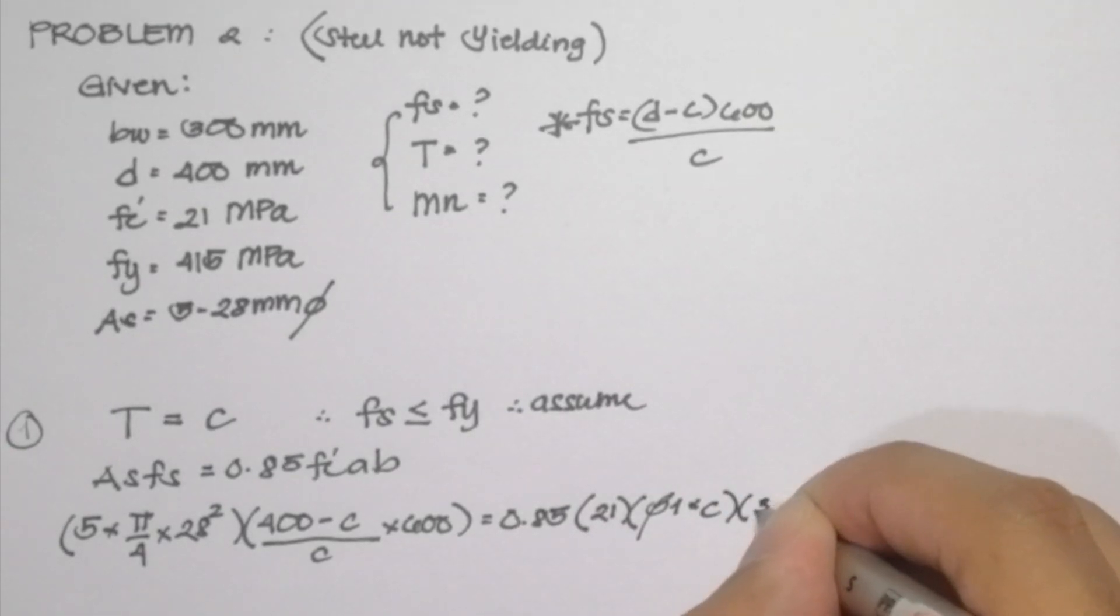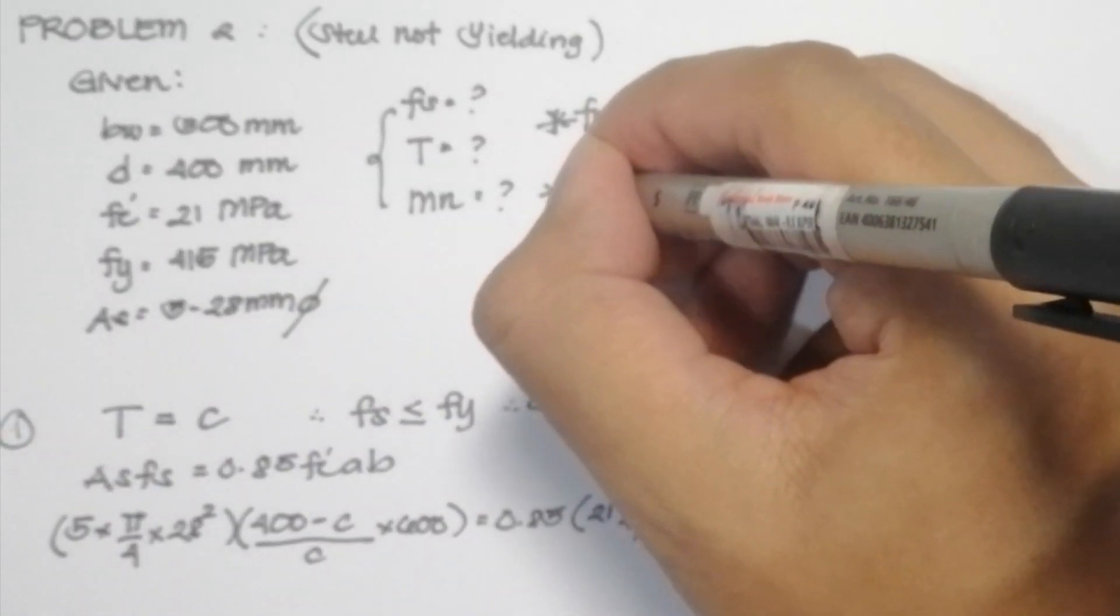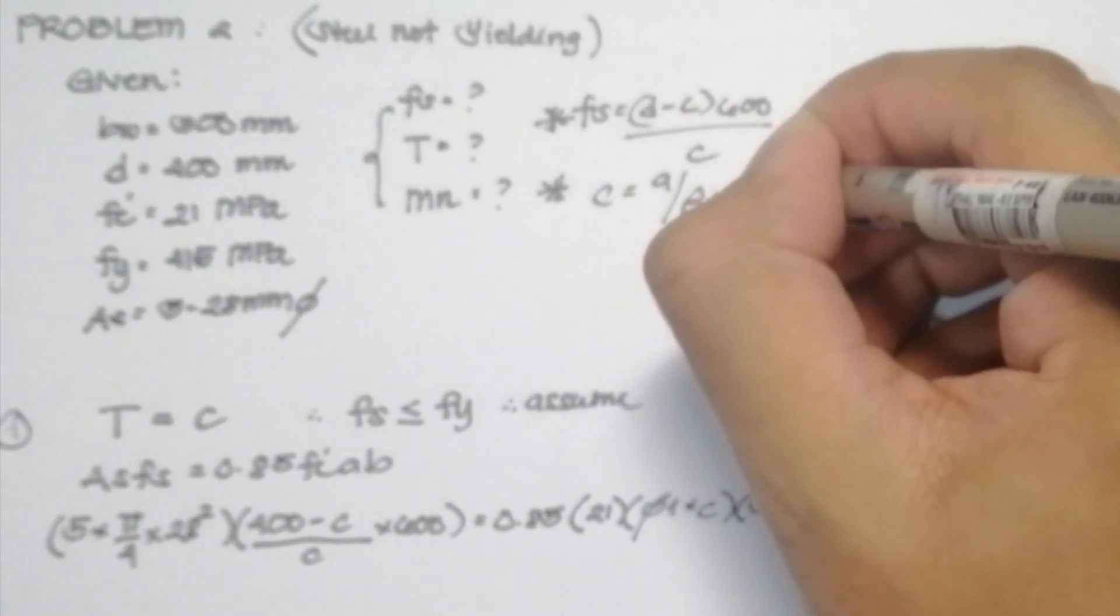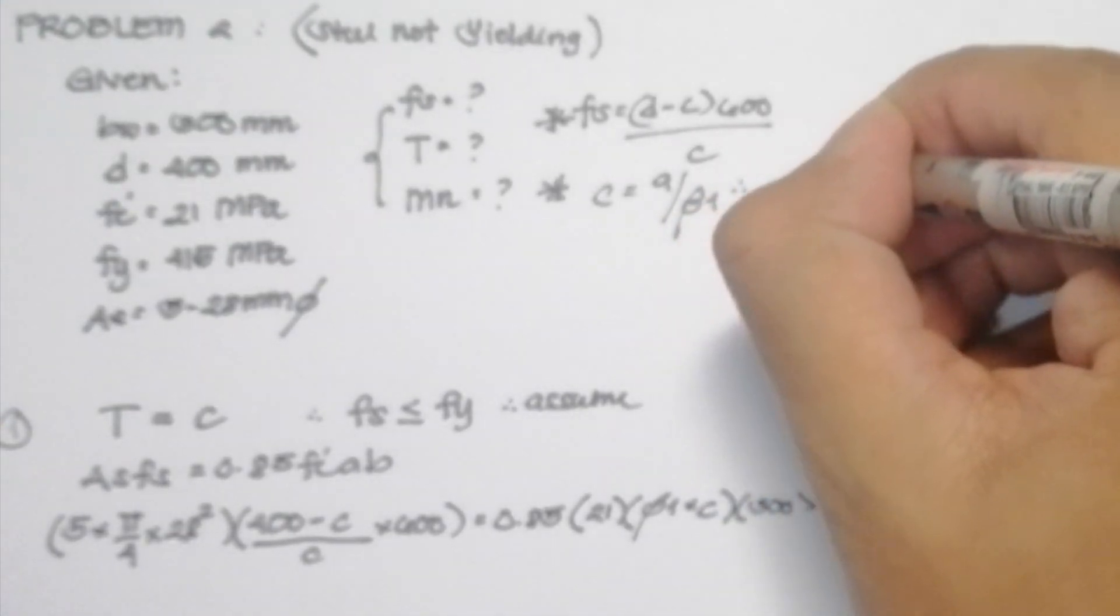So we can use A is equal to beta 1 C. It came from the formula C is equal to A over beta 1. And by transposition, A is now equal to beta 1 C. So we can use C as our unknown variable.